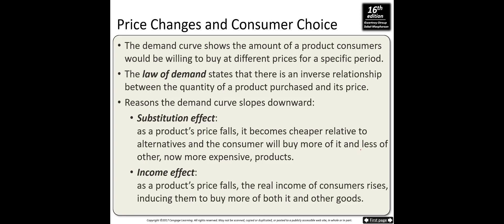We know the demand curve shows the amount of a product consumers will be willing to buy at different prices, and the law of demand states there is an inverse relationship between quantity purchased and price. The demand curve is downward sloping — when price gets lower you buy more, and when price increases you buy less.